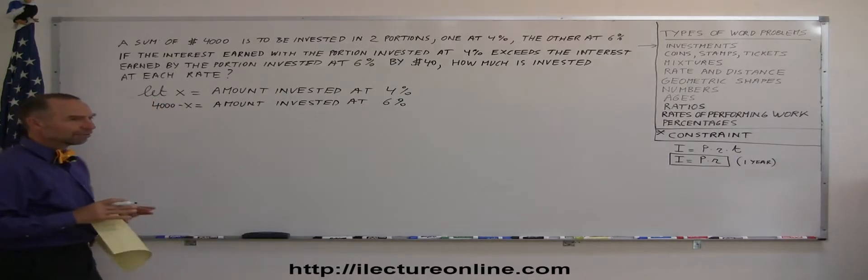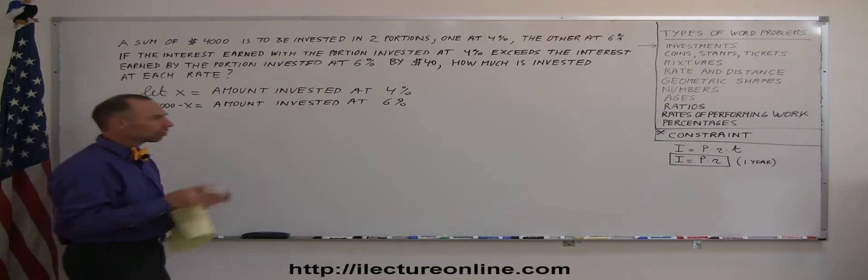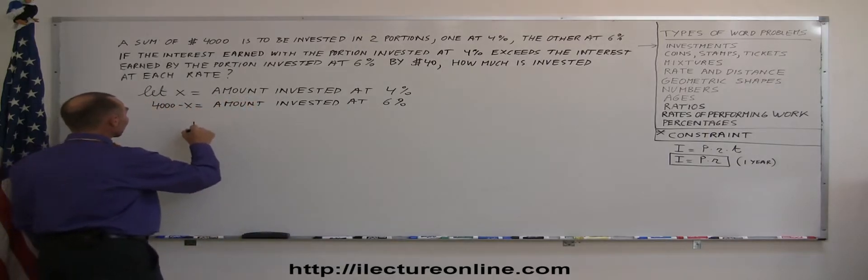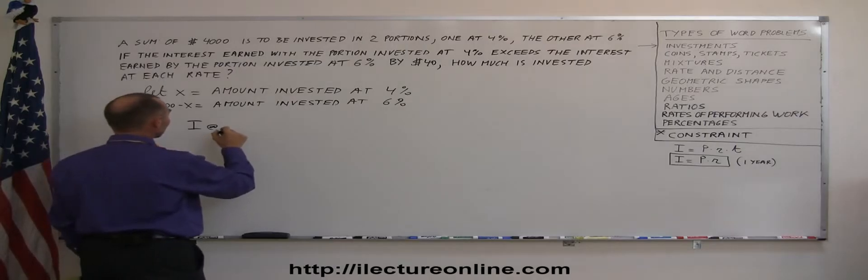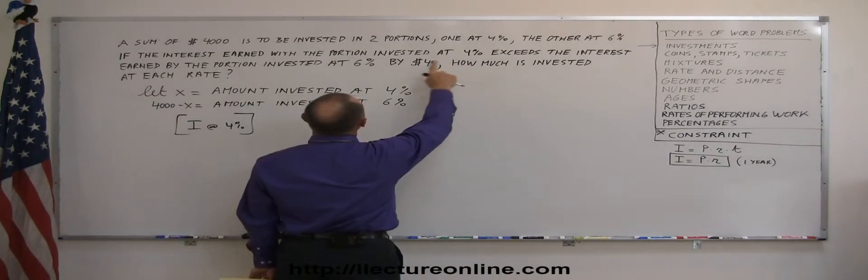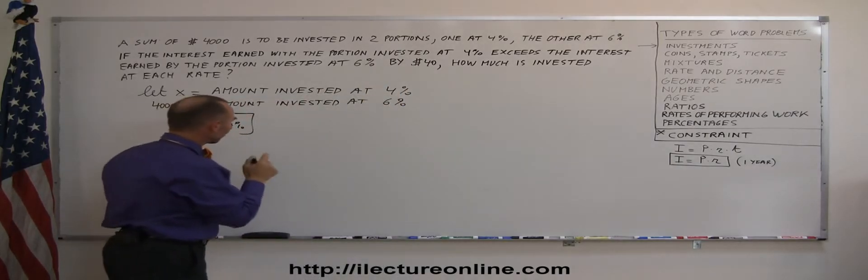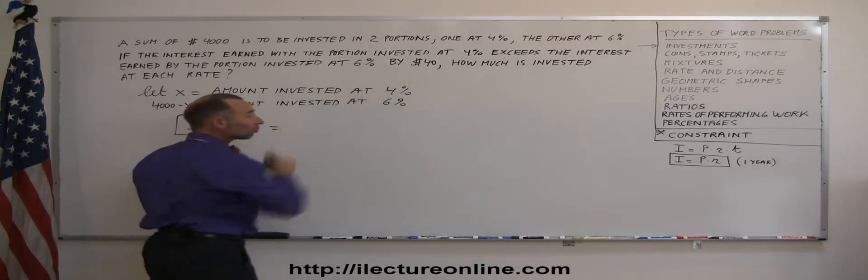Now that we have carefully defined how much we invested at each rate, now we have to come up with an equation, a constraint, something that helps us figure out this problem. And it says that the interest earned by the investment invested at 4% exceeds the interest earned by 6% by $40. So that means that the interest earned at 4% is equal to $40 more than the interest earned at 6%.